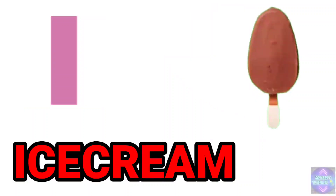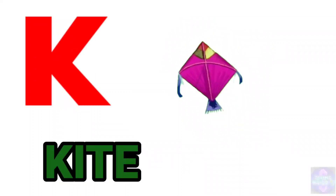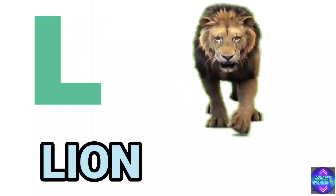I. I for ice cream. J. J for jug. K. K for kite. L. L for lion.